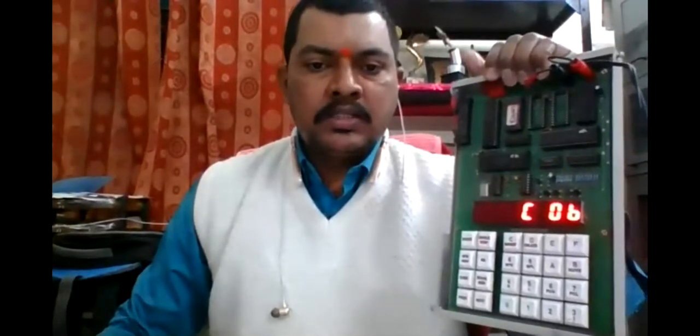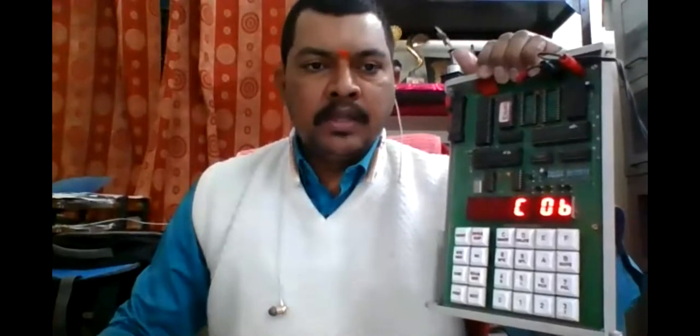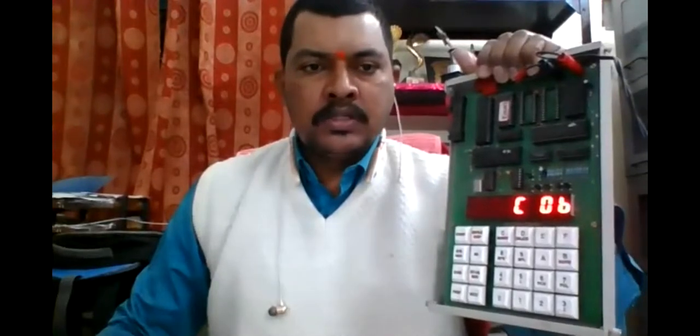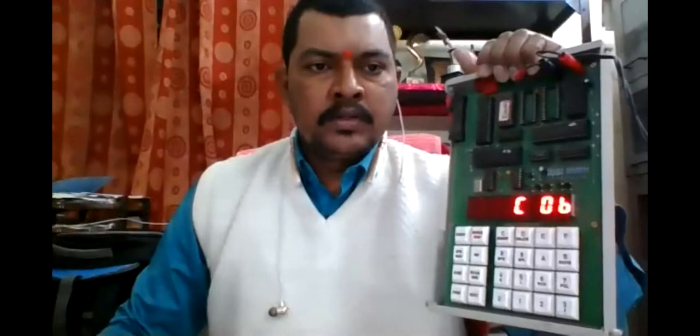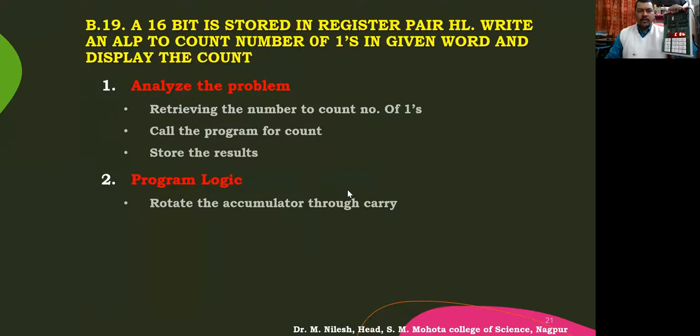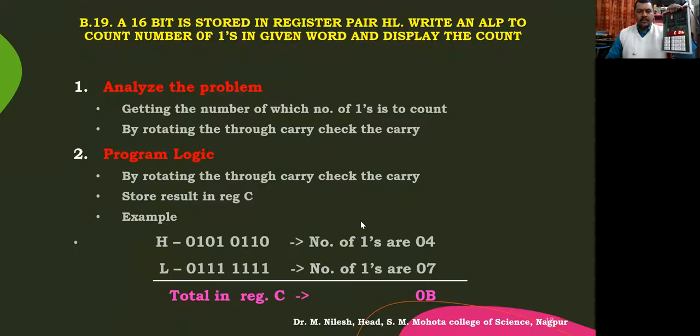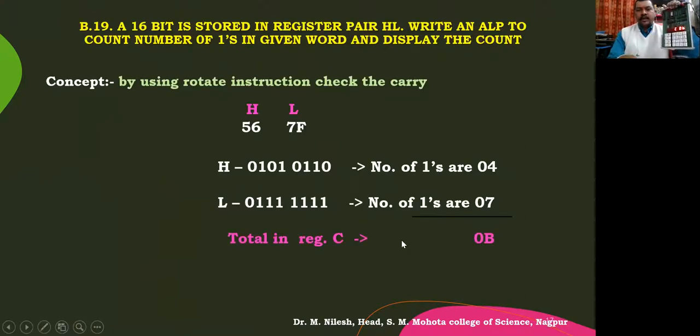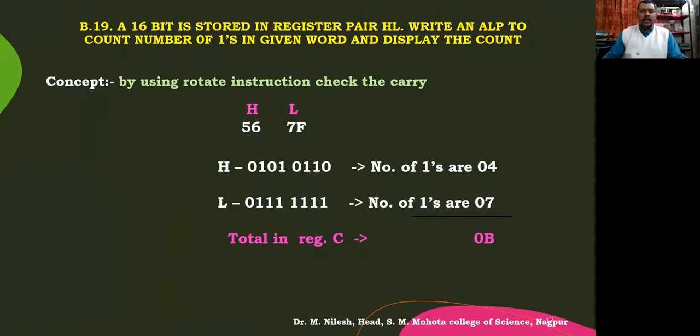If we again see the screen, we might be able to see the program that we have written and the result we got here — the result was 0B, stored in register C. This was the program studied earlier. Today we need to go for another program: to convert a binary number into Gray code. This is program number B20. That is a number which is a binary number, and we have to convert it into Gray code.